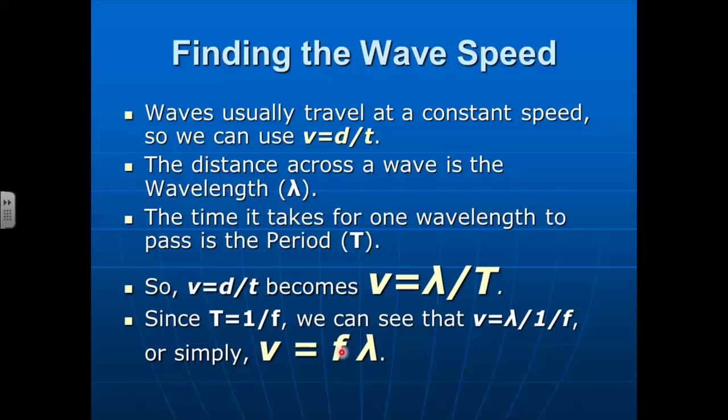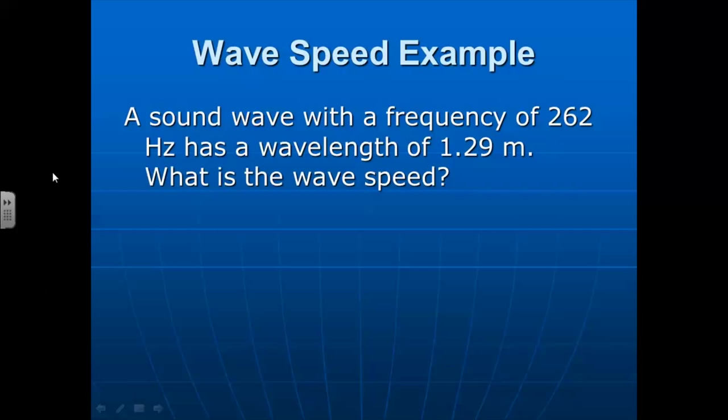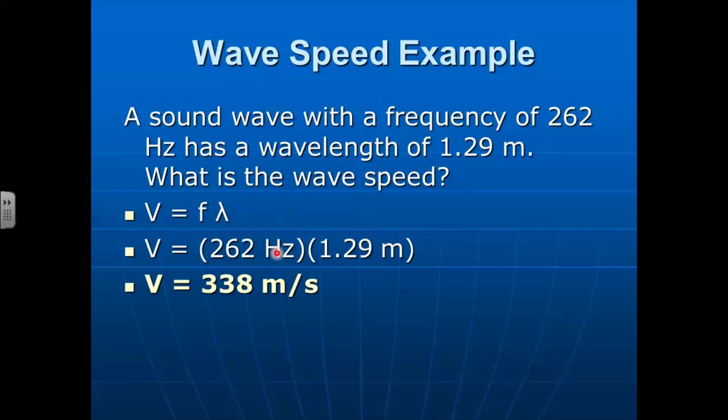A quick little example of this. Let's say that we have a sound wave that has a frequency of 262 hertz, and it has a wavelength of 1.29 meters. What is the wave speed? Well, if velocity is frequency times wavelength, then we're going to use that equation because we're given the frequency and the wavelength. We just plug it in, we multiply and get 338 meters per second. And we get these units because remember that a hertz is 1 over second. It's an inverse second. And so we get meters times 1 over second.